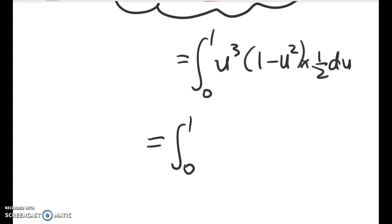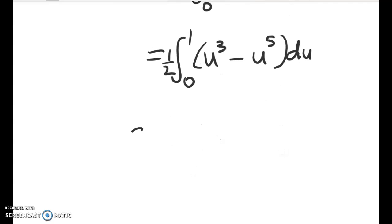We're back to a level 2 integration problem. So we've got u cubed minus u to the power of 5. And that's times 1 half. So we'll pop that out the front. Integrated with respect to u. The next bit is really easy.